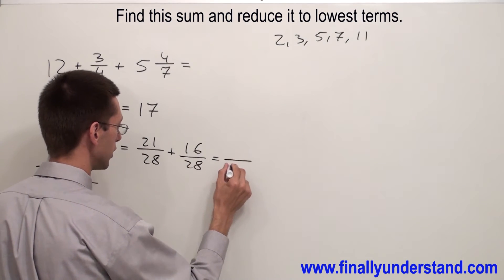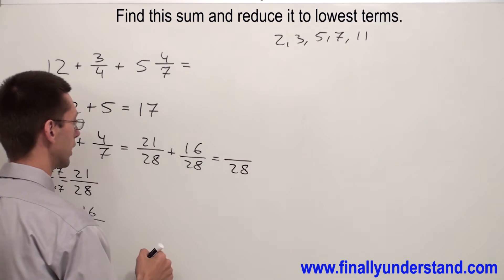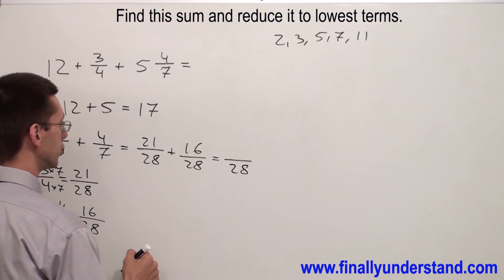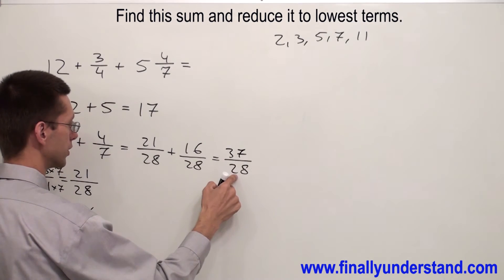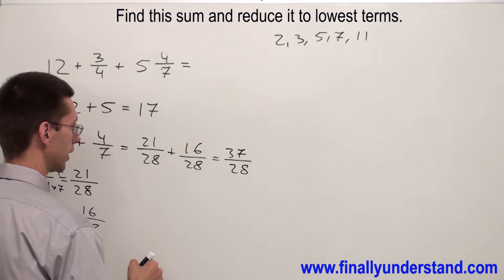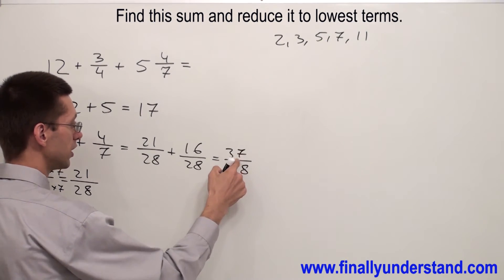21 plus 16 is equal to 37. The denominator will stay the same. Now this is an improper fraction.